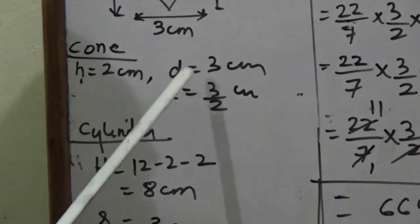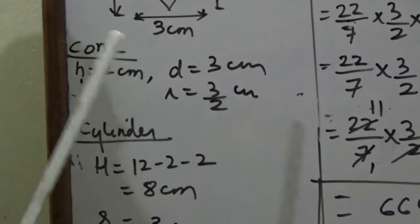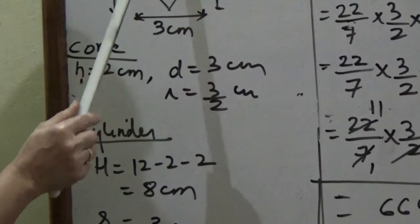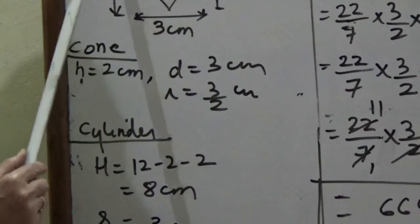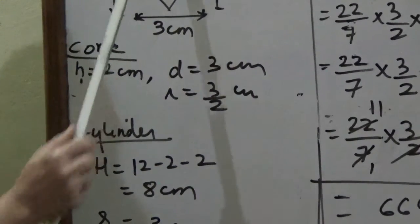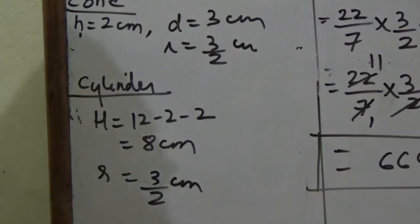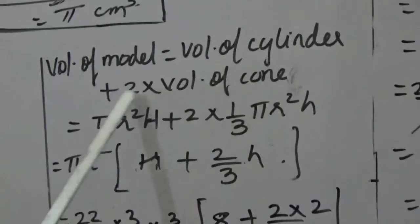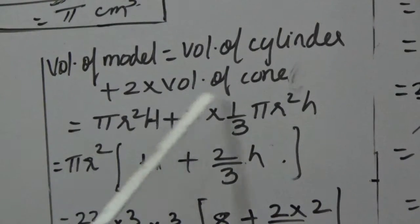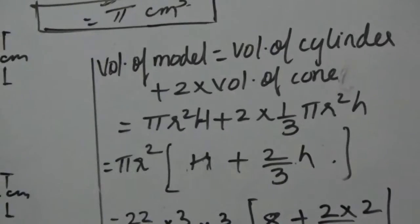Cone height is 2 cm, diameter is 3 cm, so radius is 3/2. Each cone has height 2 cm. To find the cylinder's height, subtract both cone heights from total length: 12 − 2 − 2 = 8 cm. The cylinder's radius is also 3/2 cm. Volume of model equals volume of cylinder plus 2 times volume of cone.